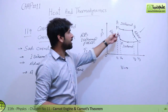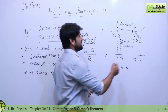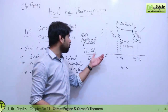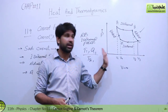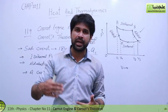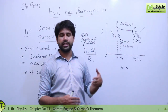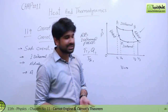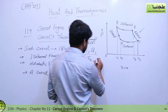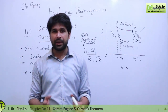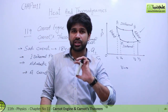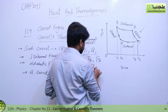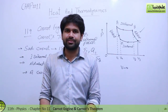After that, the second process is applied - the first process is reversed. In process A-B, the gas expanded isothermally with Q1 heat absorbed from the hot reservoir at temperature T1. Then the gas underwent adiabatic expansion in B-C. Now we compress the gas isothermally at temperature T2, during which heat Q2 is rejected to the cold reservoir.